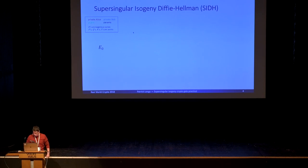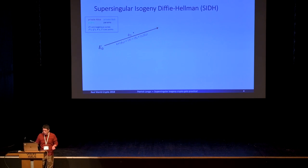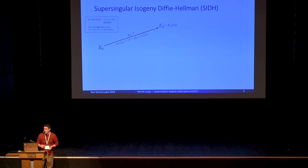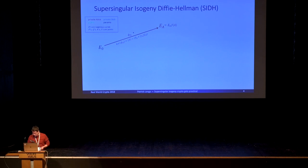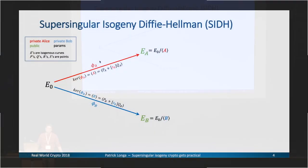Let me explain SIDH at a high level. We have a starting supersingular curve E₀. Alice establishes an elliptic curve subgroup using her secret SA. This subgroup, called A, corresponds to an isogeny that maps the original curve to another curve EA — which is E₀ modulo subgroup A. Bob does a similar computation to get to EB. These two new curves are made public and exchanged between Alice and Bob. It turns out this information alone is not enough to complete the key exchange — we need extra information.